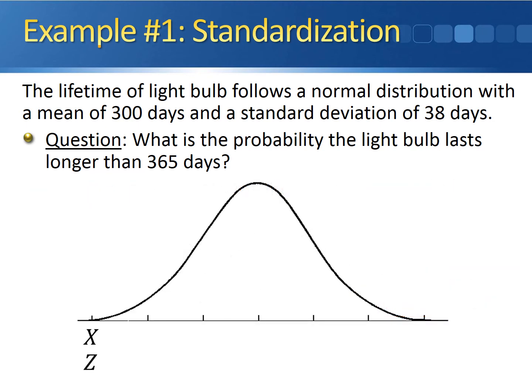Here's a graphical display of what we just did. We started out with a normal distribution with a mean of 300, and we're interested in the probability that this light bulb lasts longer than 365 days. On the standard normal curve, it's always going to be centered at zero, and 365 corresponds to 1.71 standard deviations above the mean.